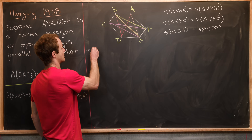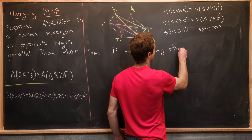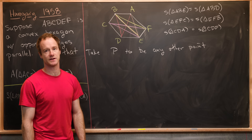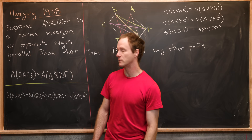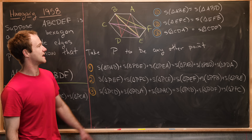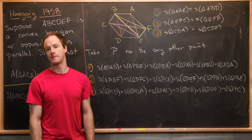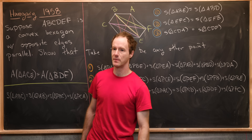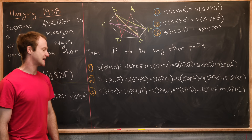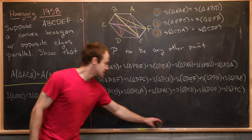Now take P to be any other point in the plane. We'll expand the left-hand side and the right-hand side of each of these three signed-area equalities using the identity we proved in the previous lemma. That gives us three equivalent equations where each side has been expanded.